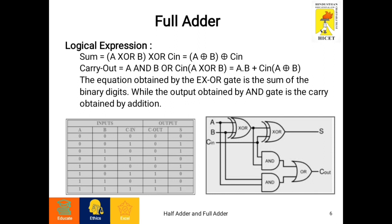We use a full adder because when a carry-in bit is available, another 1-bit adder must be used since a 1-bit half adder does not take any carry-in bit. A 1-bit full adder adds 3 operands and generates a 2-bit result. Therefore, C out equals (A AND B) OR (C in AND (A XOR B)), and this is the full adder's logic circuit.